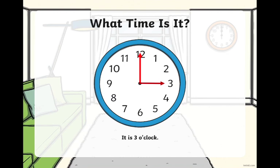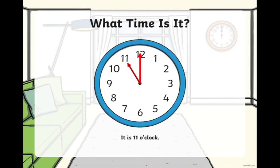Let us do another example. Here, the minute hand is pointing at the 12 again, and the hour hand is pointing at the 11. So now, what time is it? It is 11 o'clock. If you guessed correctly, well done!